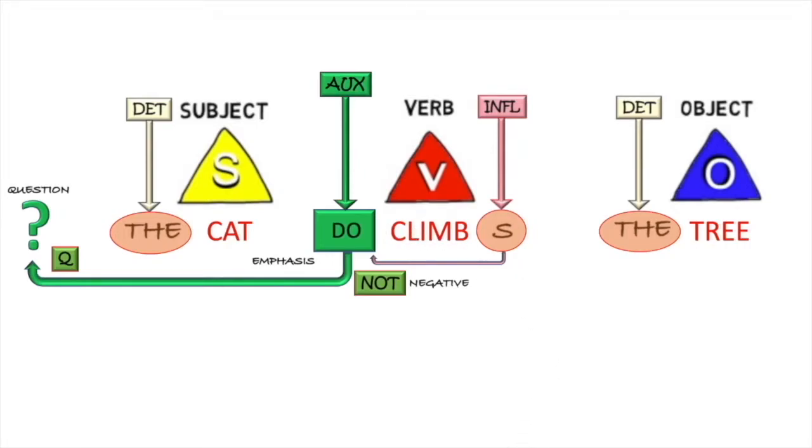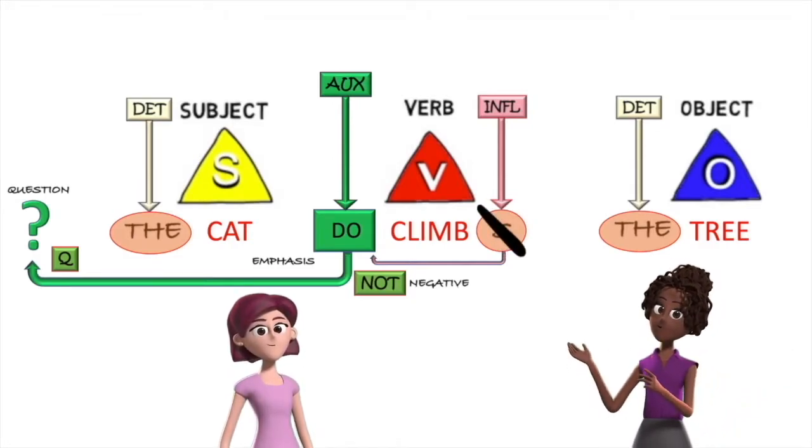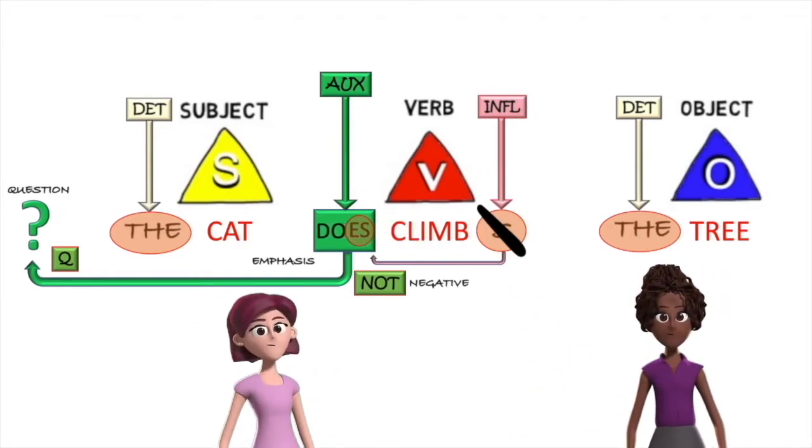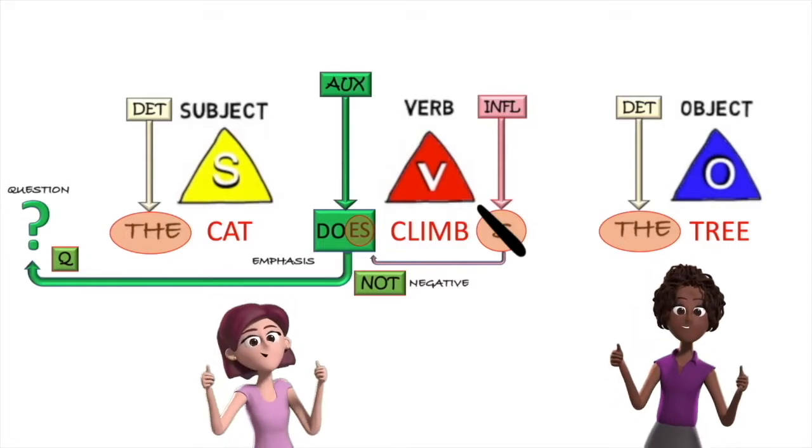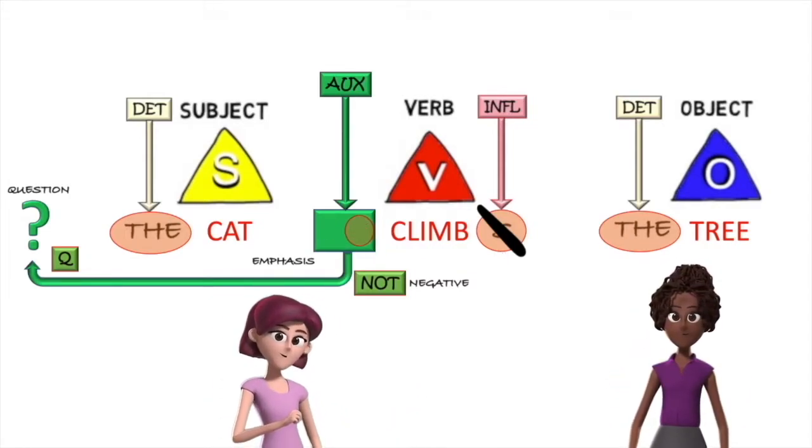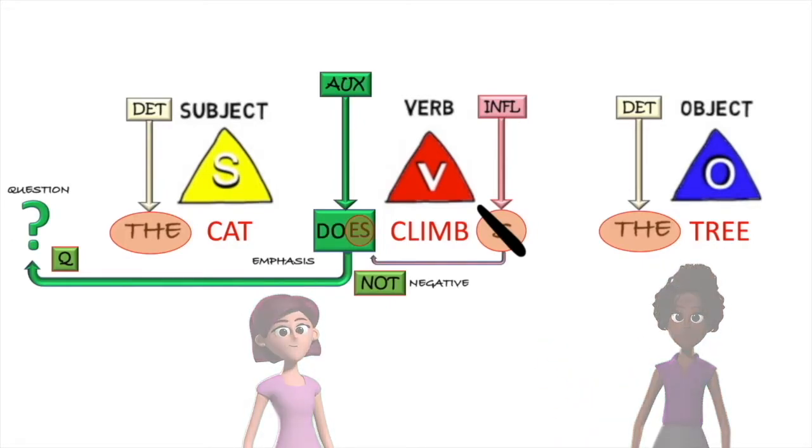And then we introduce the auxiliary do that sets off a rule that says, the inflection on the main verb gets taken away and put onto the auxiliary. Yes, that's right. You've got it. Well done. So, climbs becomes climb and do becomes does. That's right. Very good. The main verb goes into its base form and the inflection goes onto the auxiliary.